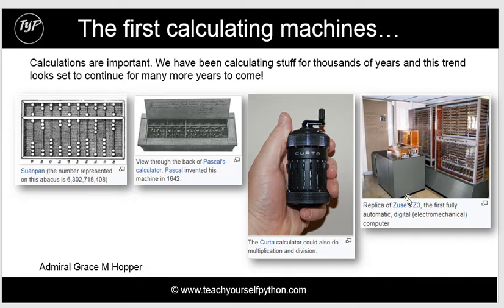On the right-hand side is a massive computer — it's the Z3 — and it's the first fully automatic digital electromechanical computer. Obviously we now have calculations that we can do on our phone, but calculations still make up a very important part of pretty much any program.